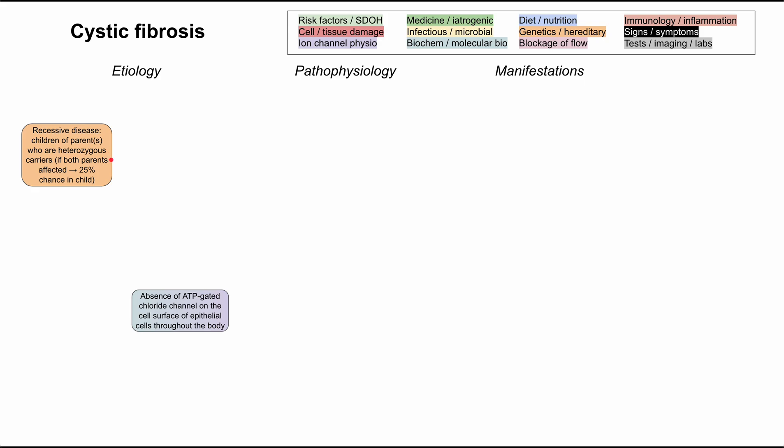If both of your parents are heterozygous carriers, their child will have a 25% chance of having cystic fibrosis. A heterozygous individual has two alleles and one is affected, giving a 50% chance of passing on that allele. If both parents have that 50% chance, the child has a 25% chance of receiving the affected allele from both parents. You can also acquire the disorder through random mutations.